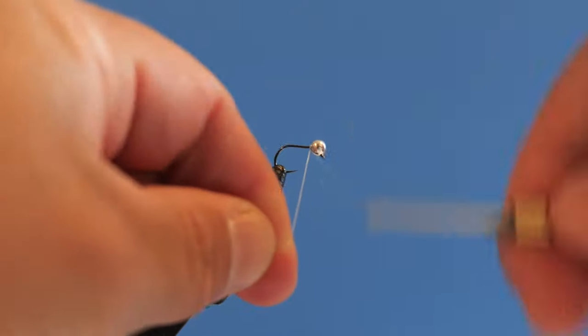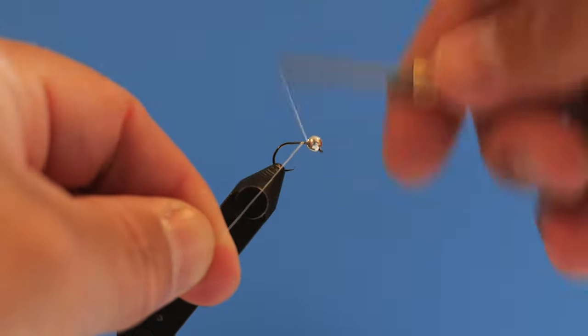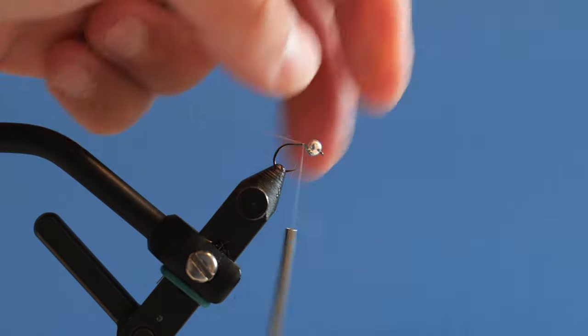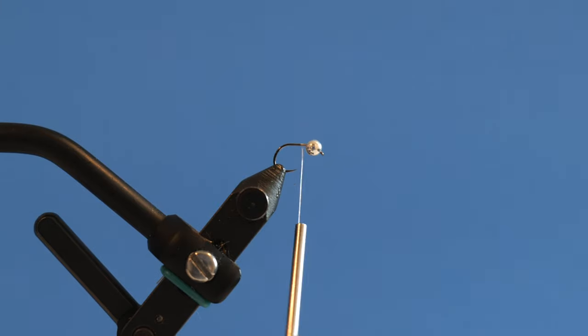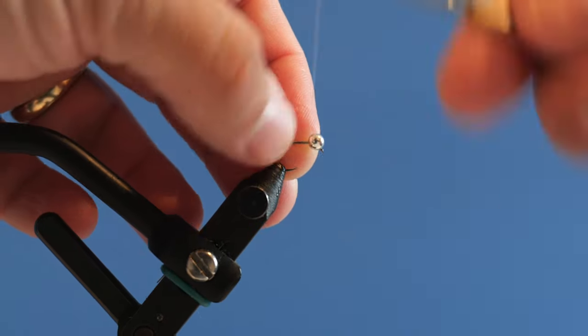Let's get into tying it now. In the vise I have a Fulling Mill 5125 size 18 jig hook and a three and a half millimeter slotted tungsten Hanak bead in silver.